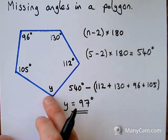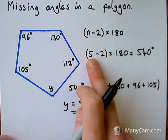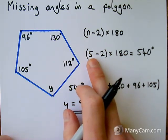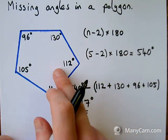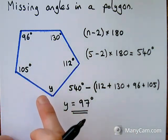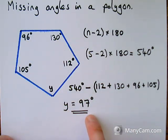So for this example, we had a five-sided shape. We put n is 5 into this formula, multiplied by 180 to get the total amount of degrees in this shape. Then I took away all of the degrees that I know to end up with 97 as my final answer.